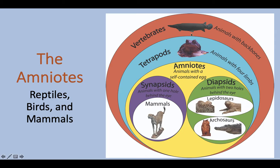A great example of a tetrapod would be amphibians, which we just learned about. We can further divide vertebrates into those that are also amniotes. Amphibians and fish are not amniotes. Amniotes are animals with self-contained eggs, and the major examples of amniotes are reptiles, birds, and all mammals. There are some other terms like synapsids and diapsids, but what we're focusing on is what it means to be an amniote.